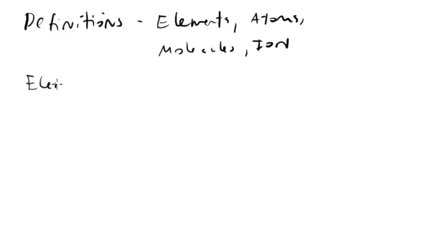So first, elements. Now, elements are substances, as we discussed in an earlier video. They are a substance that cannot be separated or broken down by chemical means. So can't be broken down chemically. Now it doesn't mean they can't be broken down at all, it's just we can't do it with chemical reactions.